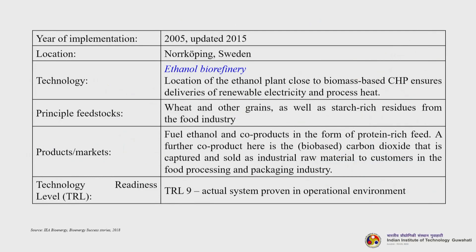The year of implementation is 2005, updated or upgraded in 2015. Location is Norrköping, Sweden. The technology is an ethanol biorefinery. A key feature is the location of the ethanol plant close to a biomass-based CHP delivering renewable electricity and process heat. Principal feedstocks are wheat and other grains as well as starch-rich residues from the food industry. Products include fuel ethanol and protein-rich feed as co-products, plus bio-based carbon dioxide sold as industrial raw material. The TRL (technology readiness level) is TRL 9 — the actual system proven in operational environment — and it is quite a success story.